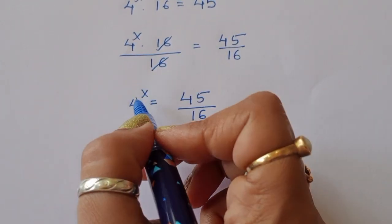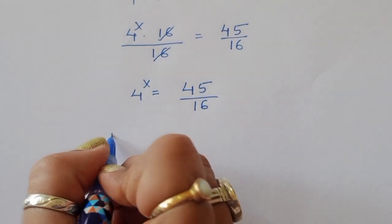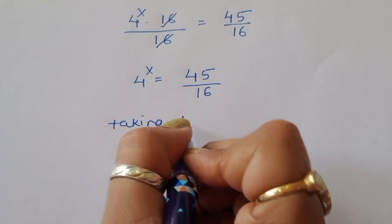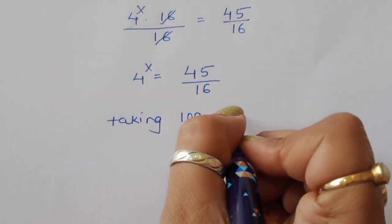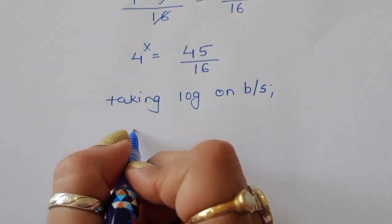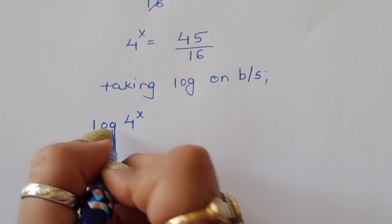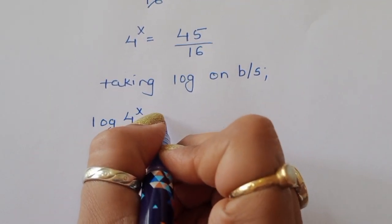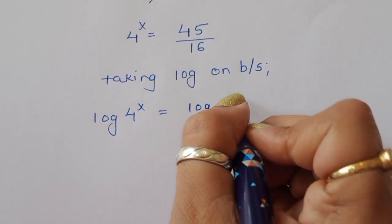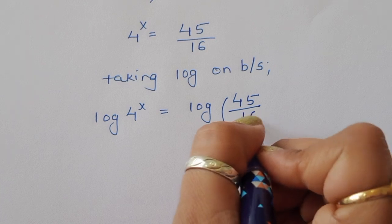Now we have to find out the value of x, so we can take log here. Taking log on both sides, we get: log of 4 power x is equal to log of 45 divided by 16.